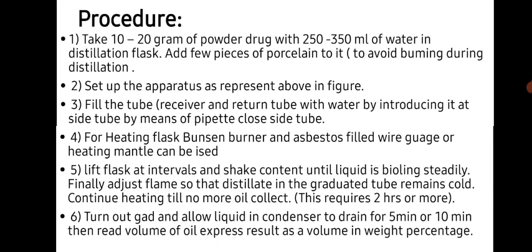Procedure: take 10 to 20 grams of powder drug with 250 ml of water in a distillation flask and add a few pieces of porcelain to it to avoid bumping during distillation. Set up the apparatus as represented above in the figure. Fill the tube receiver and return tube with water by introducing it at the side tube by means of a pipette, then close the side tube. For heating the flask, a Bunsen burner and asbestos gauze or heating mantle can be used. Lift the flask at intervals and shake the contents until the liquid is boiling steadily.